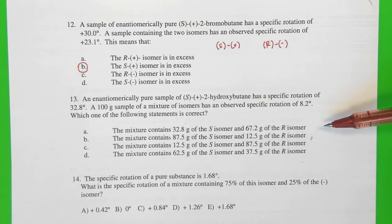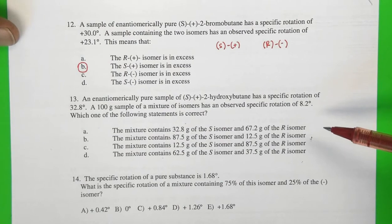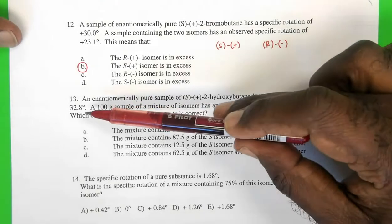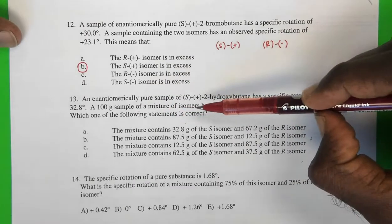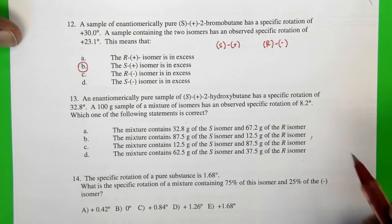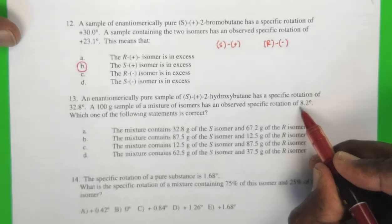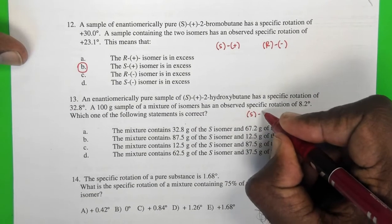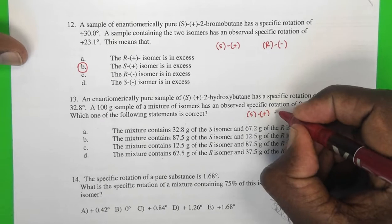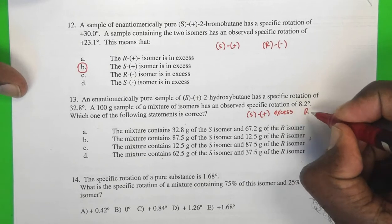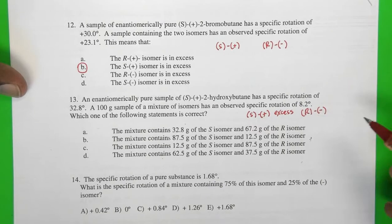Going on to question number 13, we see how we can use some values in examples like these. Here we have an enantiomerically pure sample of S(+)-2-hydroxybutane having a specific rotation of 32.8 degrees. Then we have a 100g sample of a mixture of isomers with an observed specific rotation of 8.2 degrees. You can see that we have a positive sign, just like a positive sign here, which means that the S(+) isomer must be in excess. Which means that we have the opposite, the R(-) isomer, also in the mixture.